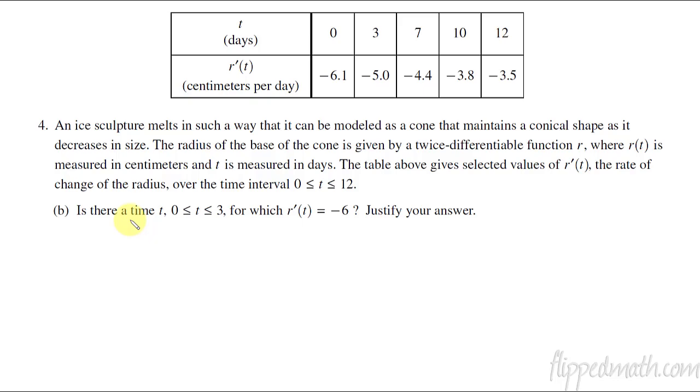Next we're asked is there a time between 0 and 3 for which r'(t) equals negative 6. My first thought was mean value theorem because it's the rate of change. Except this already is r prime, so this is not the mean value theorem, this is actually the intermediate value theorem. We're looking at when does this thing actually equal negative 6.